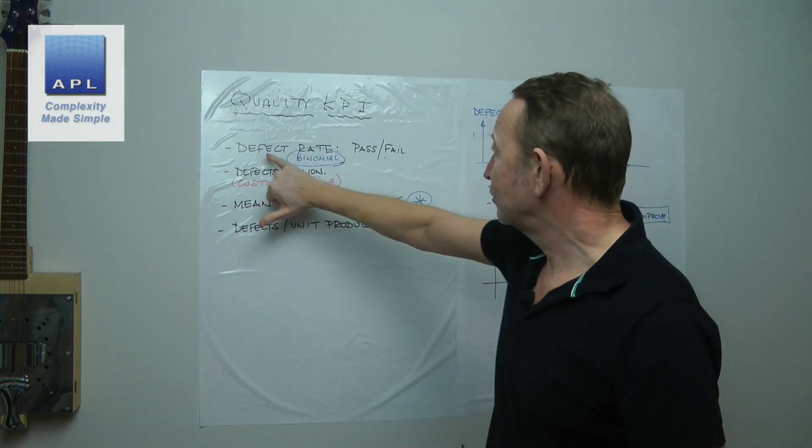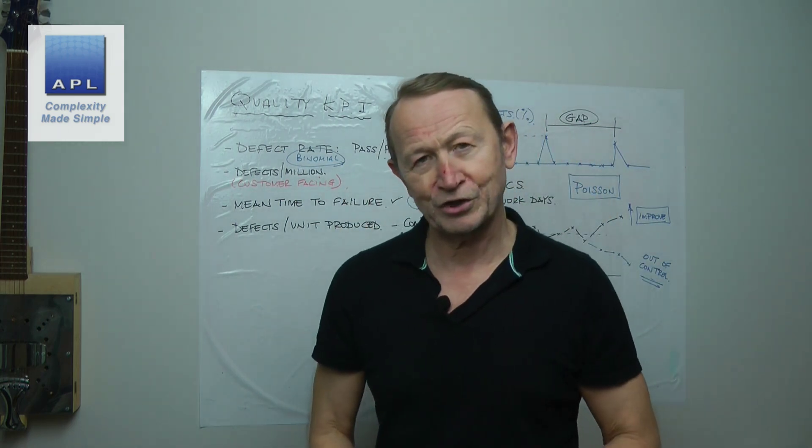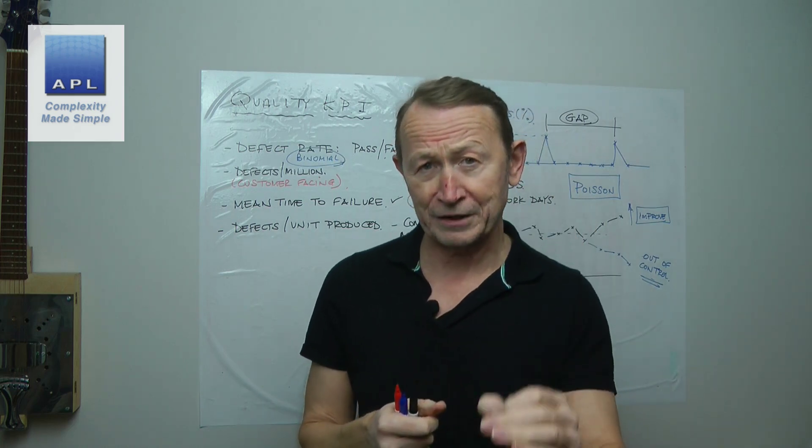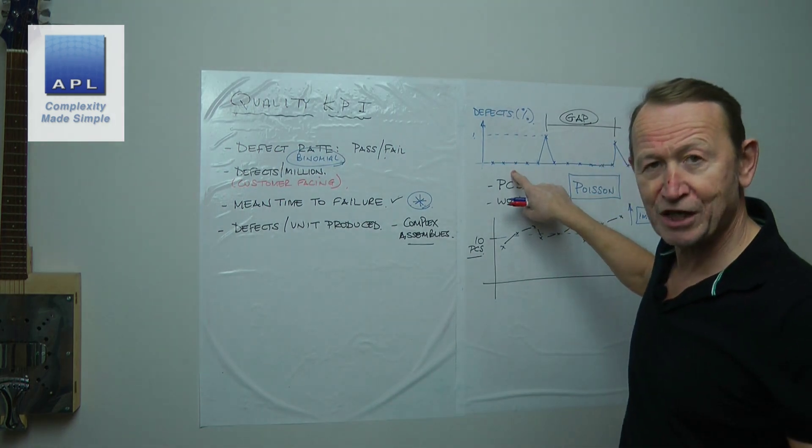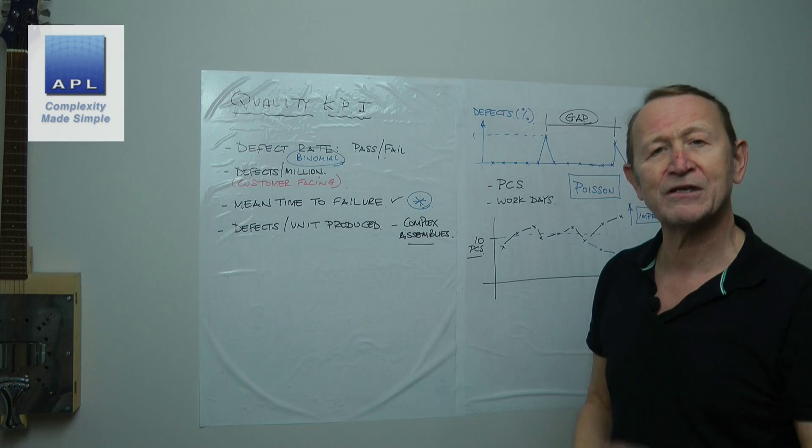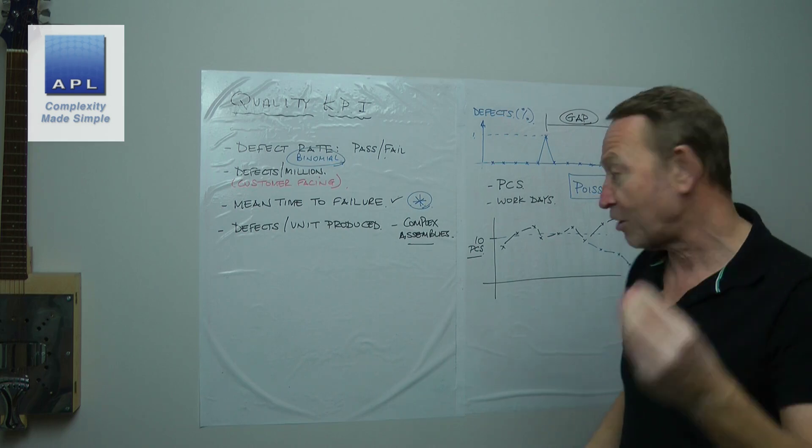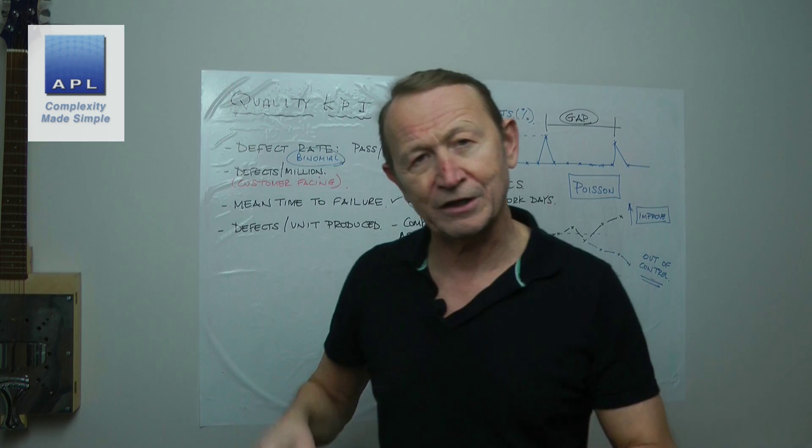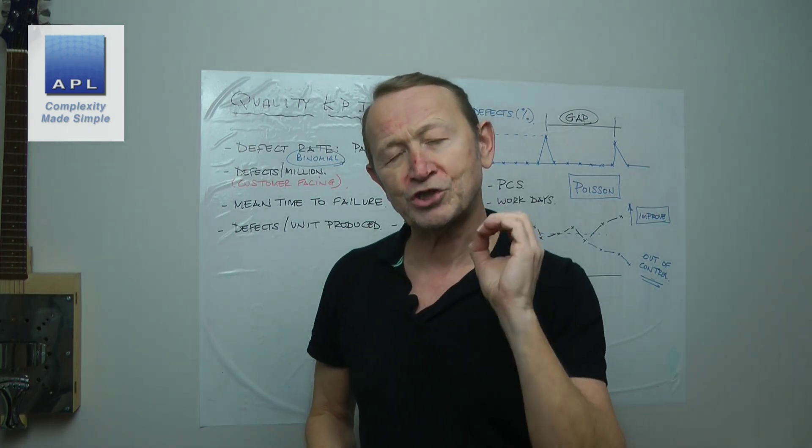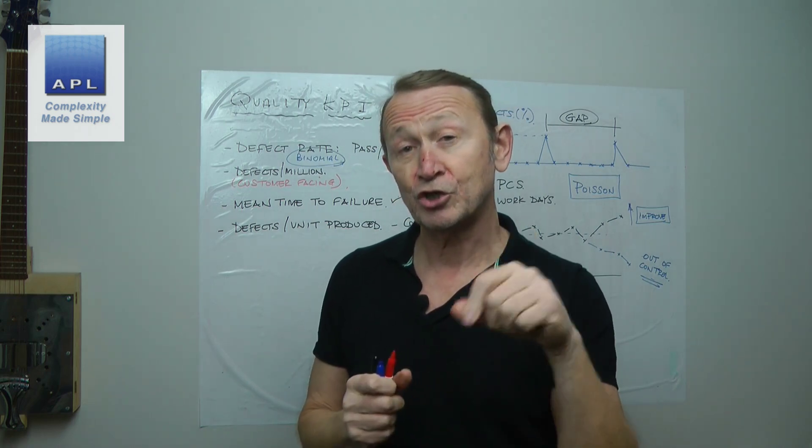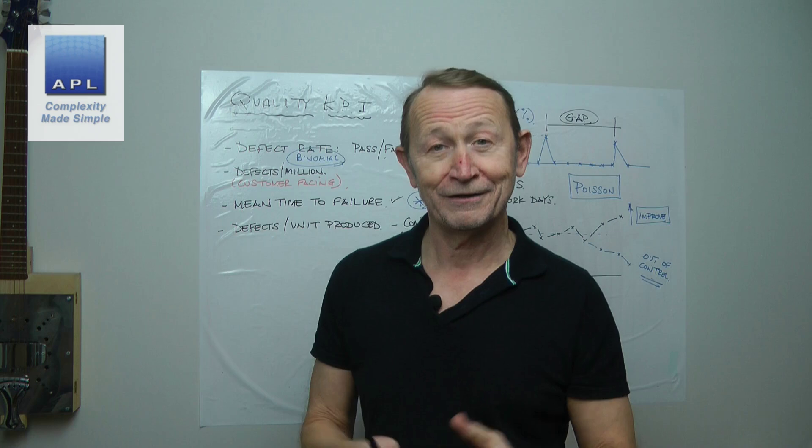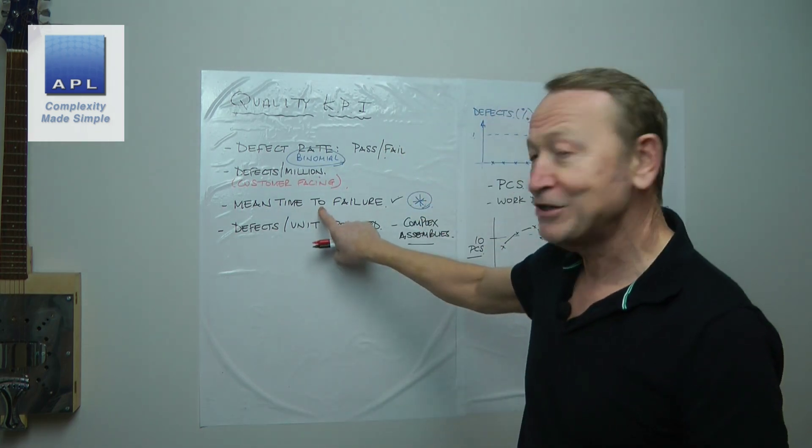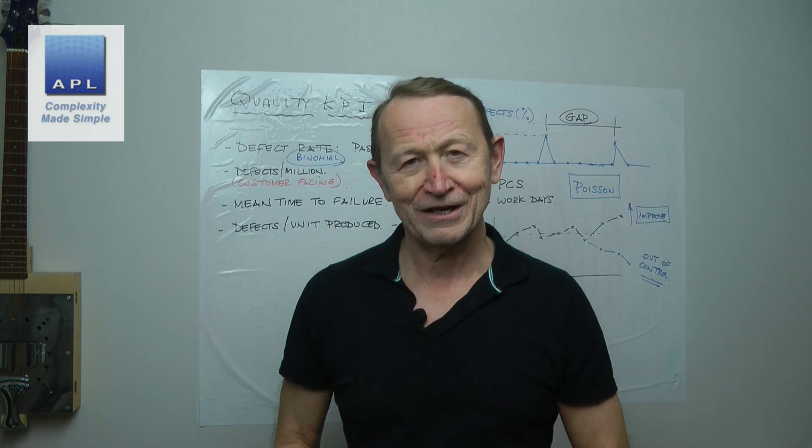So defect rate and defects per million, brilliant for high volume situations. But when the defects get rare, by the way, even in a high volume company, if your defect rate goes so rare that you're plotting zeros, you need to change to mean time to failure, to be able to judge what's going on, to be able to see improvement, to be able to see deterioration, or to be able to see stability. That graph is going to be a much more stable piece of information for you to look at, you will act and react in a much more stable way. And therefore you won't waste effort. And ultimately, you'll make more money. Use mean time to failure when your defect rate is very, very low.